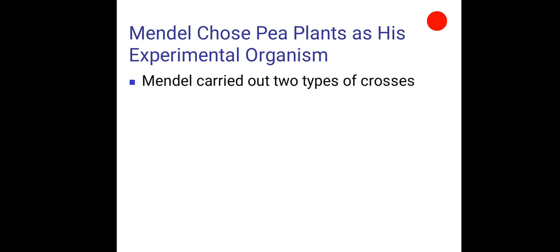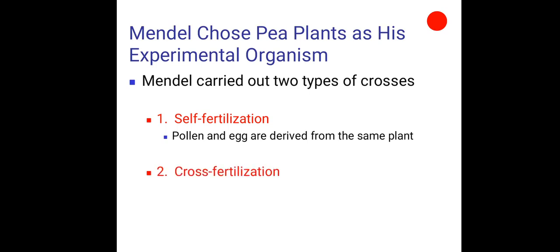Mendel carried out two types of crosses. Self-fertilization, in which pollen and egg are derived from the same plant. Cross-fertilization, in which pollen and egg are derived from different plants. We shall be referring to figure 2.3 for cross-pollination.